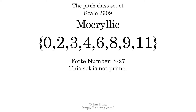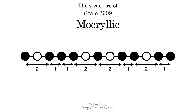The pitch class set for this scale is 0, 2, 3, 4, 6, 8, 9, 11. The Forte class is 827. This set is not prime. The structure of a scale is a description of the interval distance between each successive tone. This scale has a structure of 2 1 1 2 2 1 2 1.